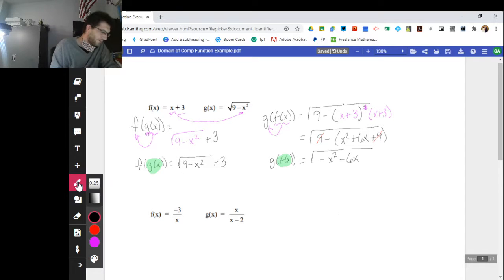All right, so let's take a look at what we have. With roots, we want to make sure that the radicands, the inside of the roots, are greater than or equal to zero. Because we know that we can't take the square root of a negative number.